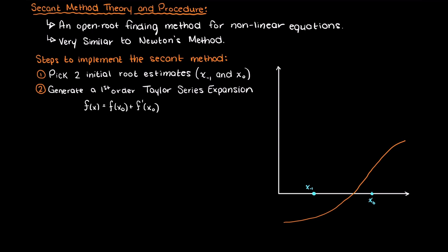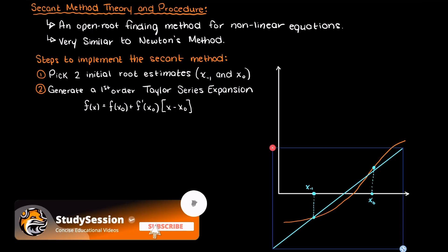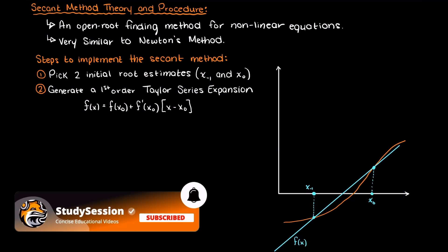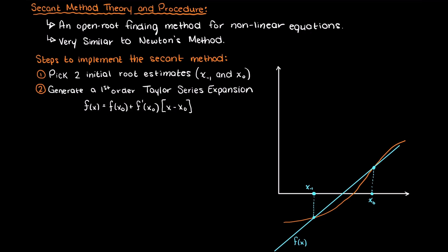Just as a quick reminder, we use the Taylor series expansion to approximate a continuous function as a polynomial, which is great as the derivative of polynomials are very easy. Any first order Taylor series expansion will just give us a straight line, which should make sense when we look at this equation — we basically have it in slope intercept form. We approximate the slope of this through using our slope formula like so.